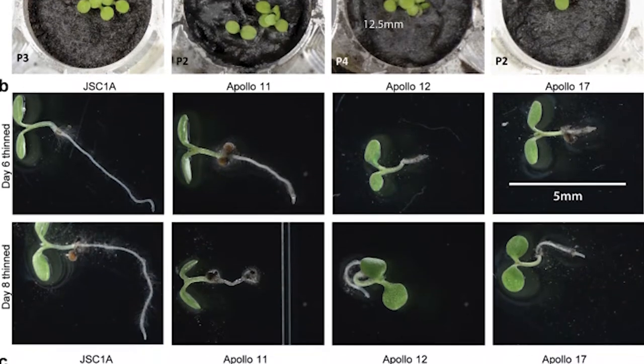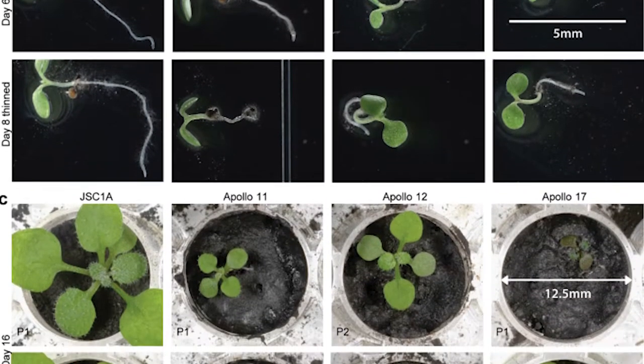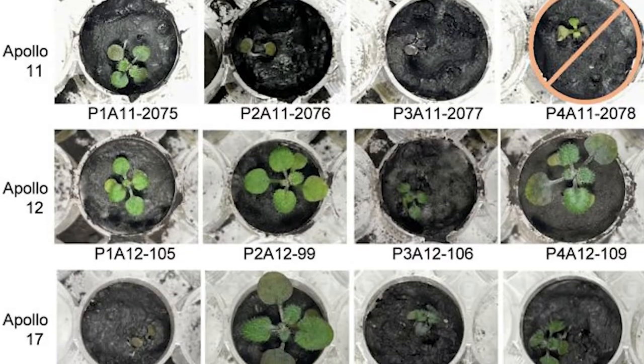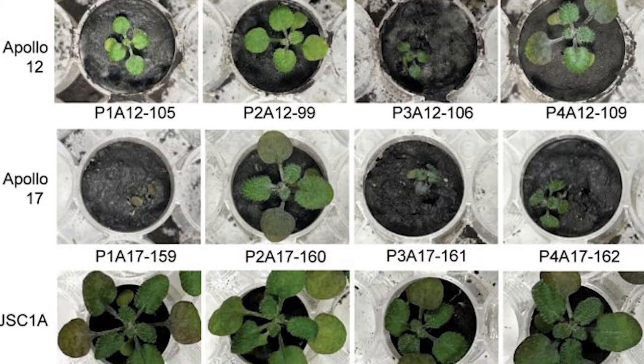When they classified the plants by morphology, they discovered that the plants that seemed the poorest, small and reddish-black in color, also had the most stress-related genetic modifications.